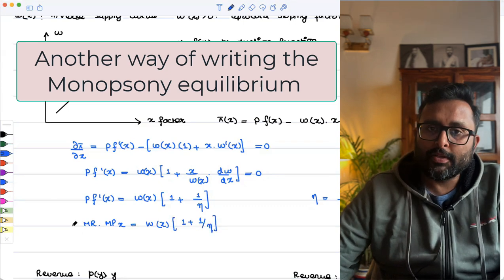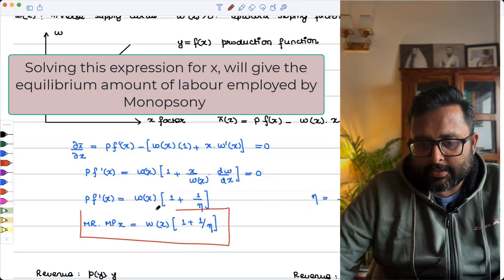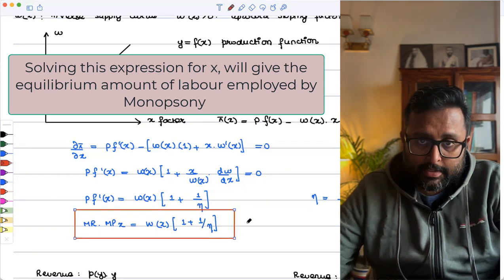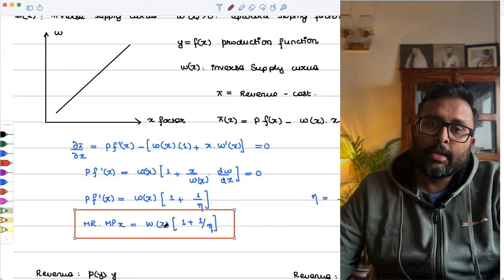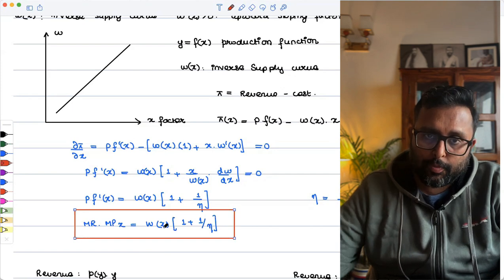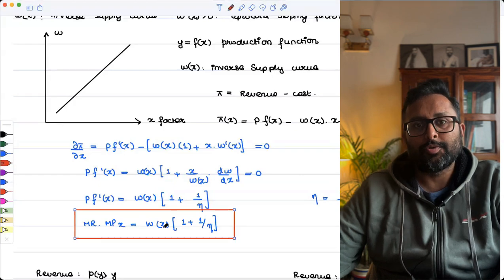So once you solve this expression, you will get the value of X which is going to maximize your profit, you being a monopsonist. That value of X is going to maximize your profits. So that is going to be the optimal value of the input. I hope this video was useful to you. Thank you.